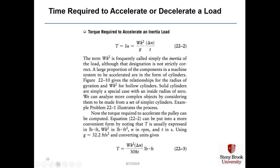The term WK² is the inertia of the load. A large proportion of components in a machine that are accelerated are in the form of cylinders, including gears, pulleys, bearings, and shafts. We can analyze more complex objects by considering them to be made solely of cylinders. Expressing torque T in pound-feet, WK² in pound-feet squared, n in RPM, and time t in seconds, with g = 32.2 ft/s², the equation becomes: T = WK² × Δn / (308 × t), in pound-feet.